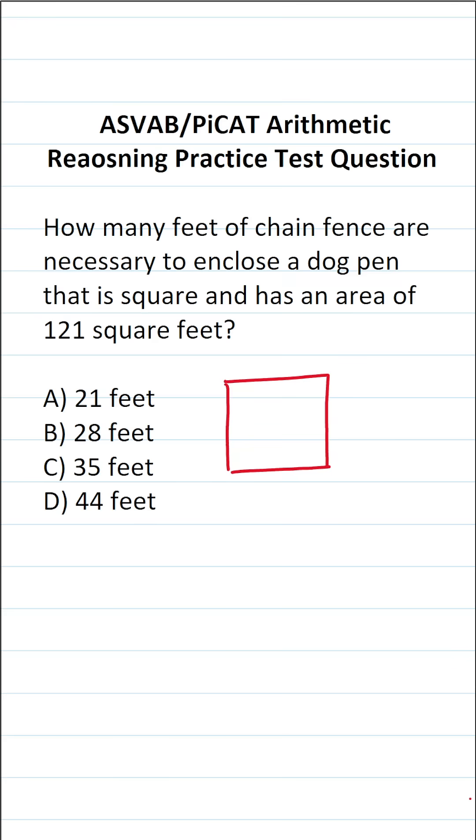We know we're talking about a dog pen that is in the shape of a square, and we want to know how many feet of chain fence we need to enclose it. In other words, we're going to be finding the perimeter of this square dog pen.